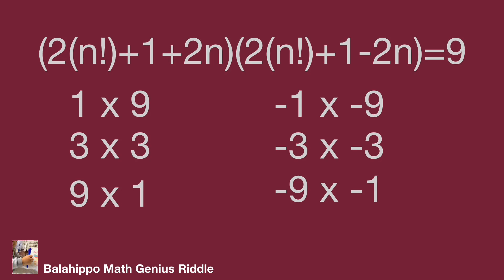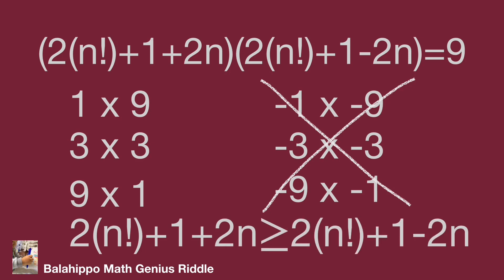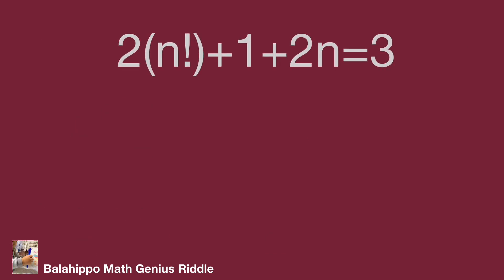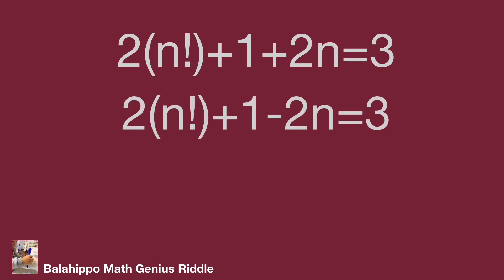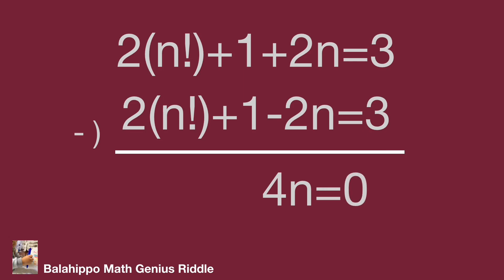Therefore, to get two quantities multiplied equal to 9, the factor pairs are: 1 times 9, 3 times 3, and 9 times 1. Since n is a positive integer, 2 times n factorial plus 1 plus 2n should be positive, so the negative groups (minus 1 times minus 9, minus 3 times minus 3, minus 9 times minus 1) are not answers. After comparing the two quantities, 2 times n factorial plus 1 plus 2n should be larger than or equal to 2 times n factorial plus 1 minus 2n. So the 3 times 3 and 9 times 1 groups meet this criteria. For the 3 times 3 case: 2 times n factorial plus 1 plus 2n equals 3 and 2 times n factorial plus 1 minus 2n equals 3. Subtracting the second from the first gives 4n equals 0, so n equals 0.